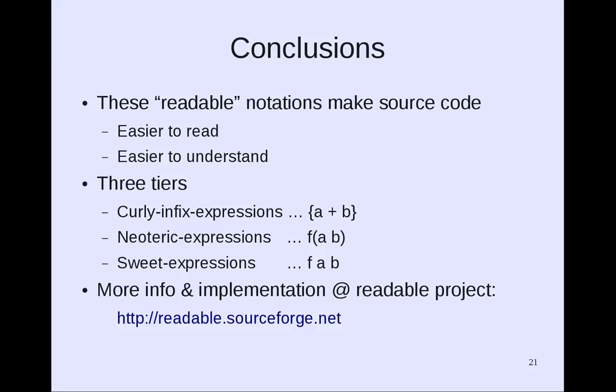In conclusion, these readable notations make list-based source code easier to read and easier to understand. There are three tiers: Curly Infix Expressions, Neoteric Expressions, and Sweet Expressions. They are all simply additional abbreviations that you can add to your existing reader. More information and implementations are available at the Readable project: readable.sourceforge.net. Thank you for your time.